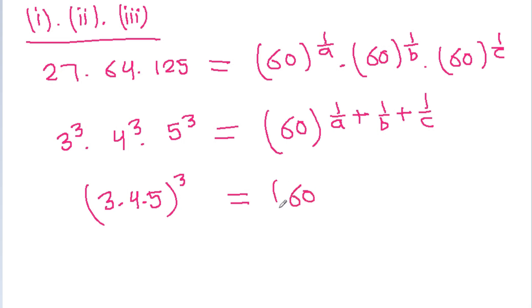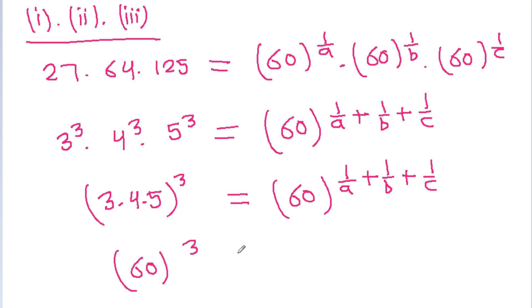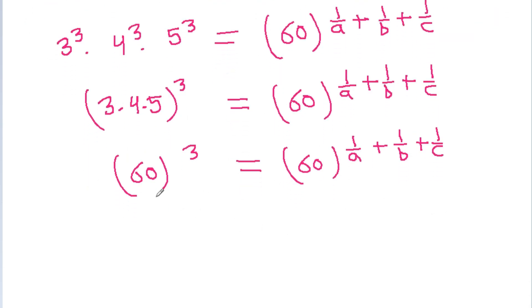So we have (3 times 4 times 5) all cubed is equal to 60 to the power (1/a plus 1/b plus 1/c). Since 3 times 4 times 5 equals 60, this gives us 60 cubed is equal to 60 to the power (1/a plus 1/b plus 1/c). Since the base is the same on both sides, we can equate the powers.